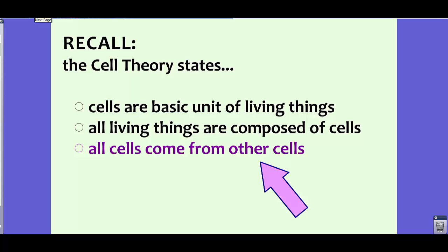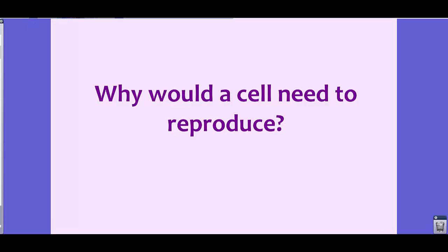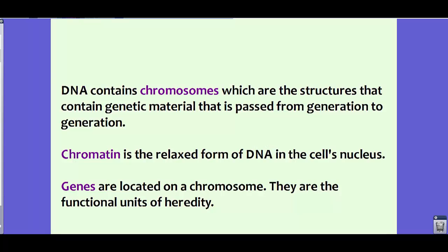Please recall that the cell theory states: number one, cells are the basic units of living things; number two, all living things are composed of cells; and number three, all cells come from other cells. This is the important part of the cell theory that we're really going to focus on for mitosis. Now why do you think a cell would need to reproduce? Think on that as we begin this lesson.